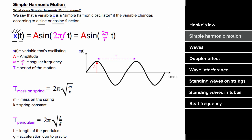That variable is gonna be equal to the amplitude of the motion — which is the maximum displacement from equilibrium — times either sine or cosine of two pi times the frequency of the motion times T. And since frequency is one over the period, you could write that as two pi over the period times T.